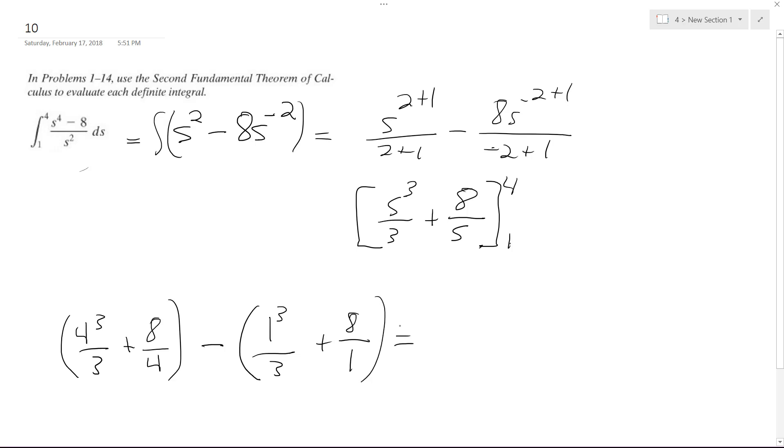So ultimately we end up with 64 over three plus two minus one third plus eight. So same thing as six over three.